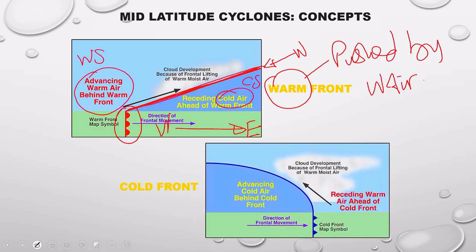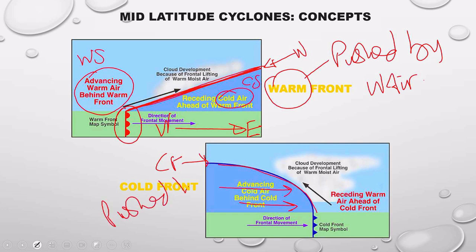That is the cold front — the cross-section of the cold front. Wherever there is cold air that meets warm air, this is what is happening. This is a cold front. Why are we calling it a cold front? Because this front is pushed by cold air — advancing cold air behind the cold front. It is called a cold front because it is pushed by cold air.